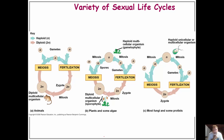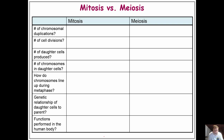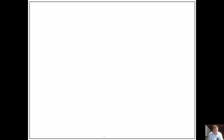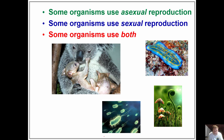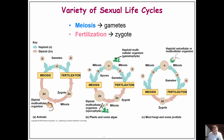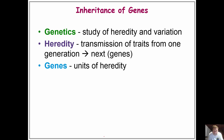Please take a look at the sexual life cycles and be able to compare mitosis and meiosis. We are going to use this to look at sexual and asexual reproduction, which we will cover later on. Genetics and heredity we will talk about in the next chapter. Have a great day.